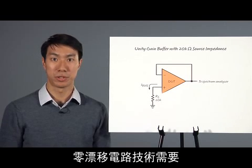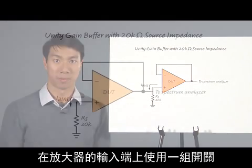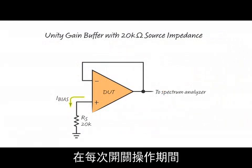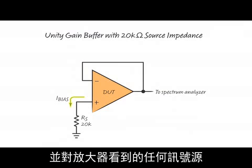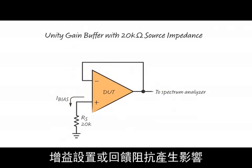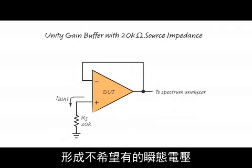Zero-drift circuit techniques require a set of switches at the amplifier's inputs. During each switching event, a small pulse of current is injected into the external circuit and will interact with any source, gain setting, or feedback impedances that the amplifier sees. The result will be an unwanted transient voltage at the amplifier's input.